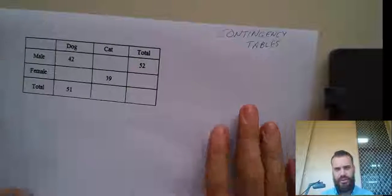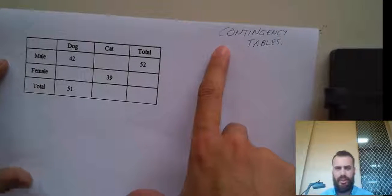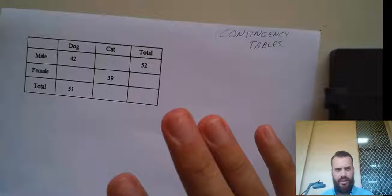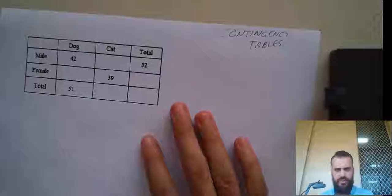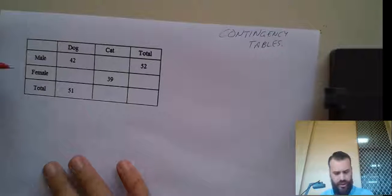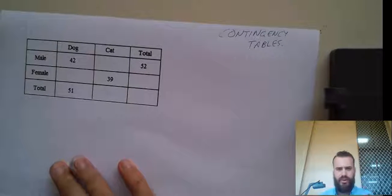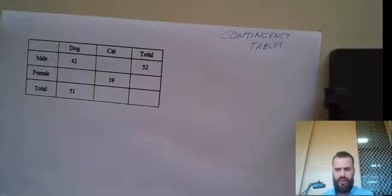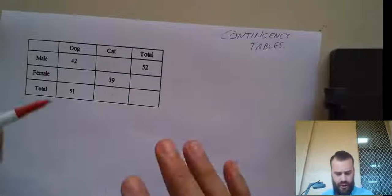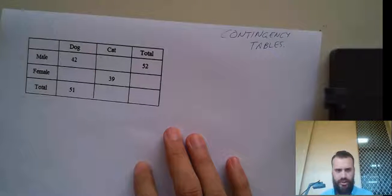We're going to look at something called a contingency table. A contingency table is pretty simple — it's when you've got two attributes of an individual and you can put it into a table like this.